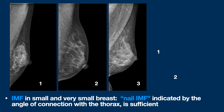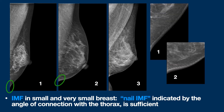Remember that sometimes in very small breasts the IMF is not clearly visible, which is barely noticeable. Examples are in figures 1 and 2, magnified to the right. This is the so-called nail IMF, where the passage of the breast over the chest must be at least perceptible. In figure 3, another example.